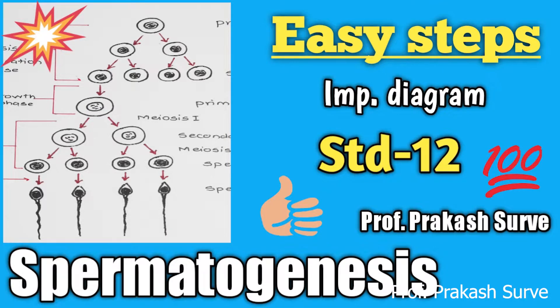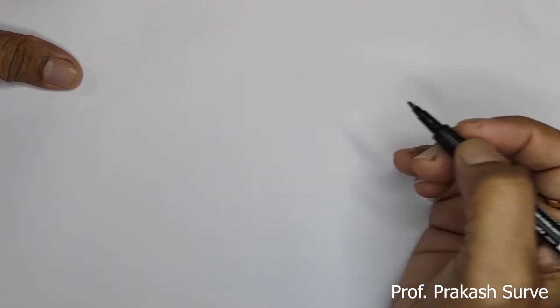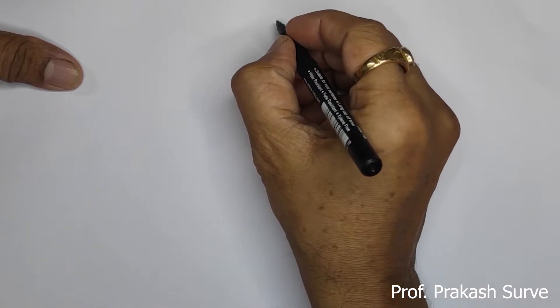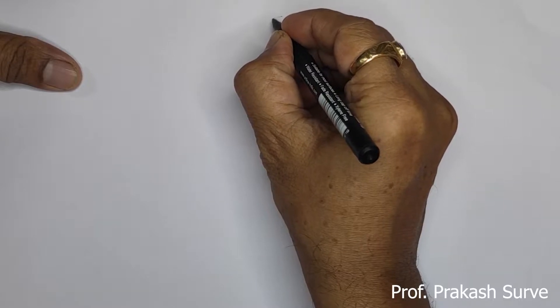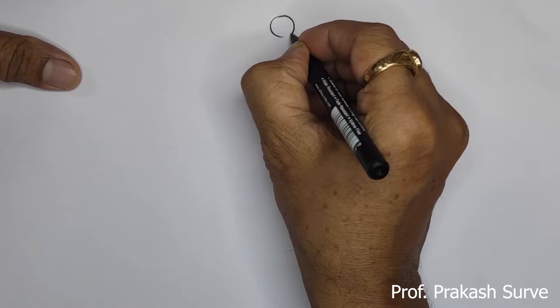Welcome dear student, today we will see about the diagram for spermatogenesis. So first, we will start with the primordial cell, which is a diploid.